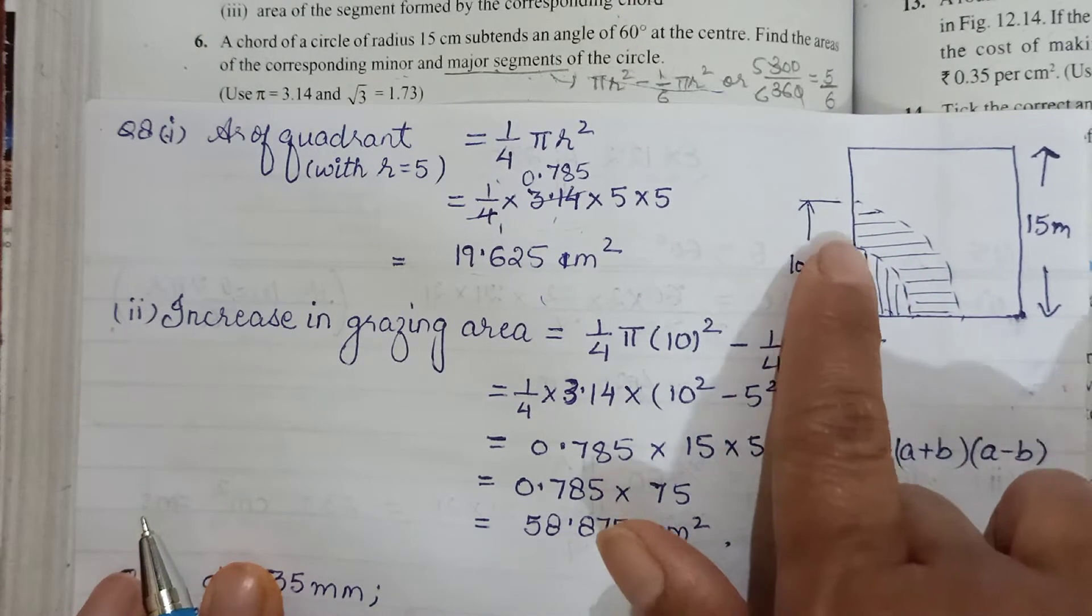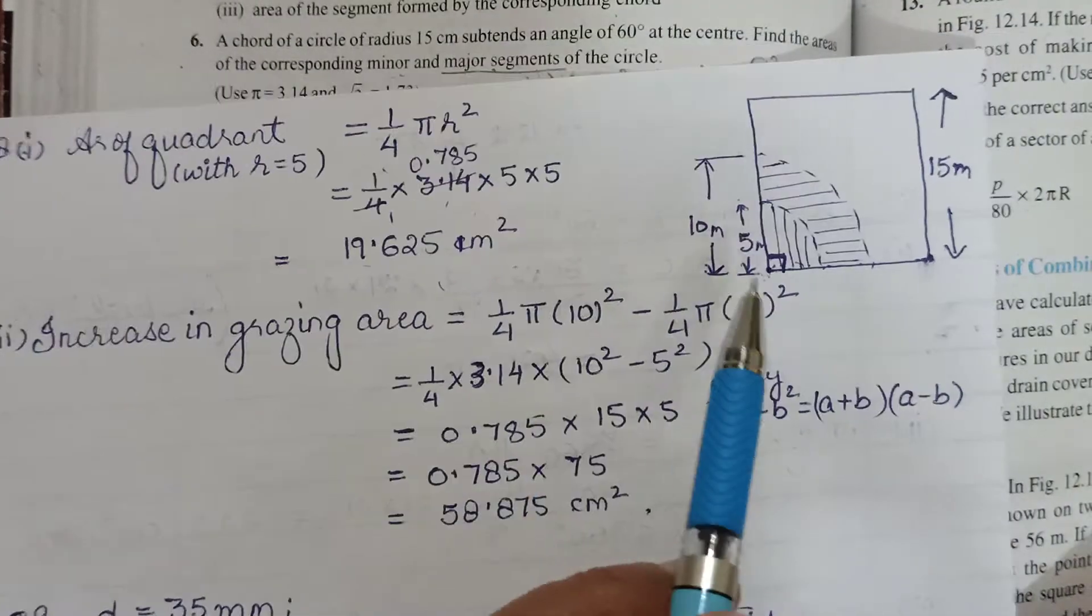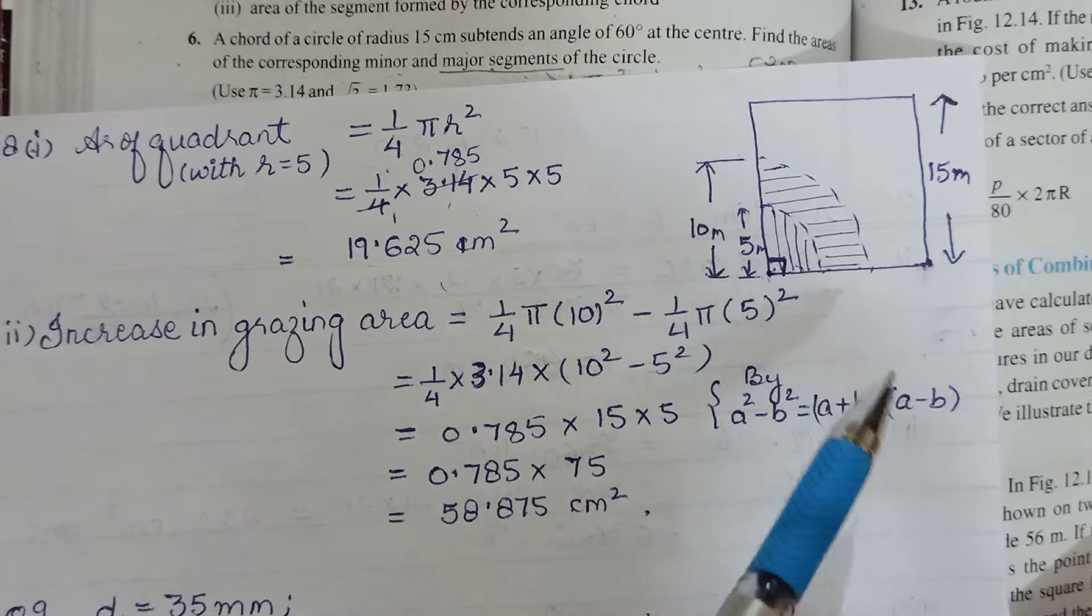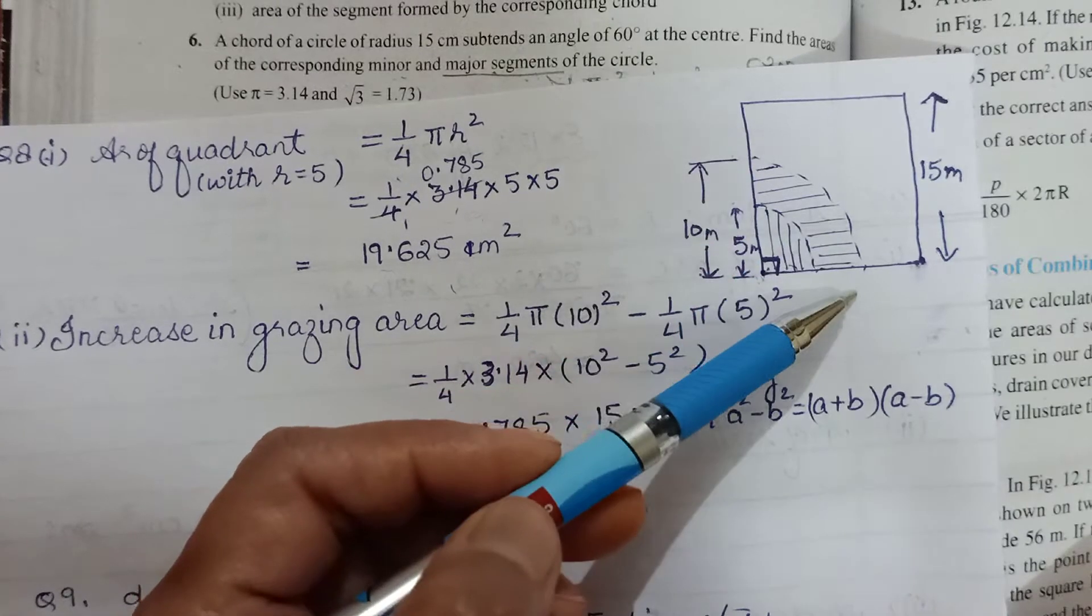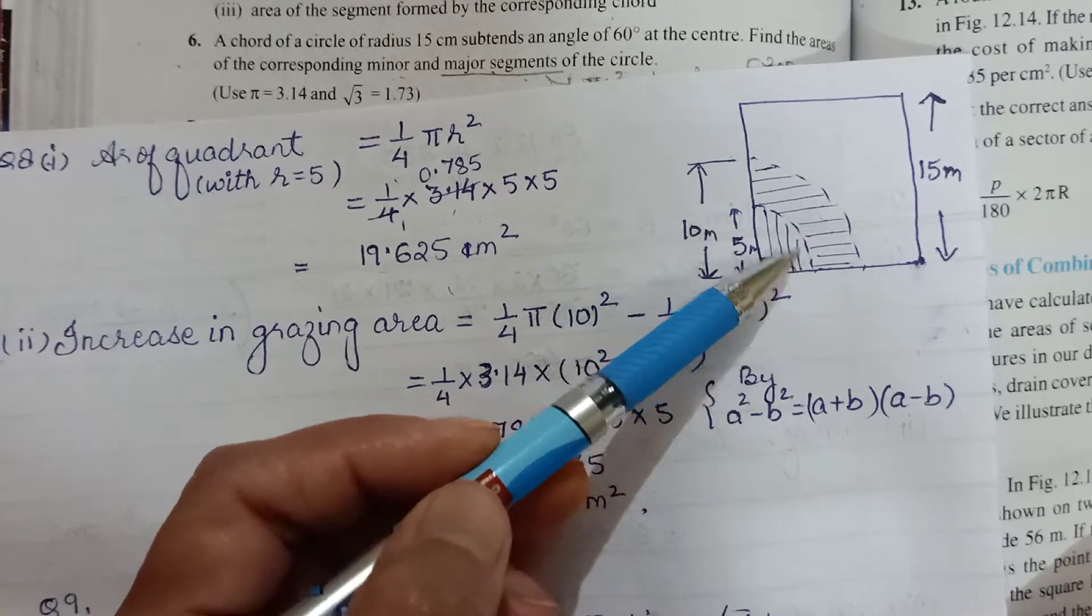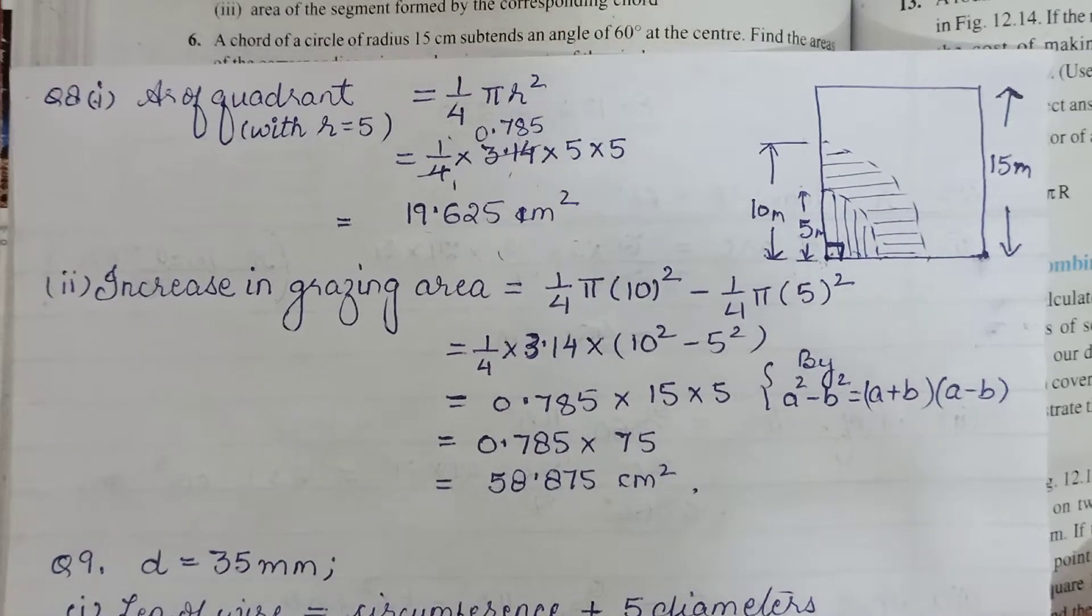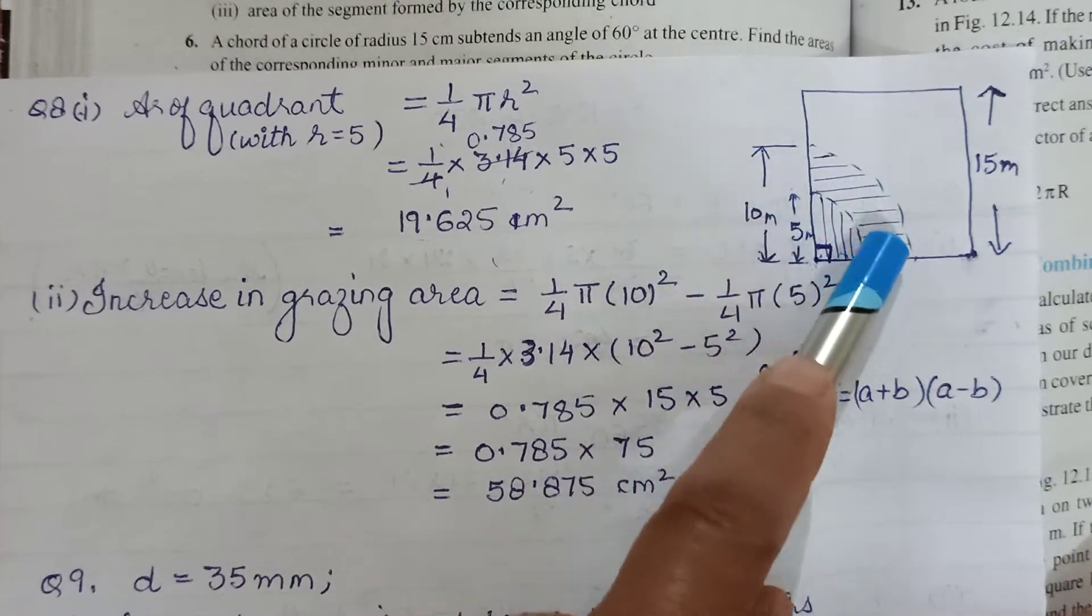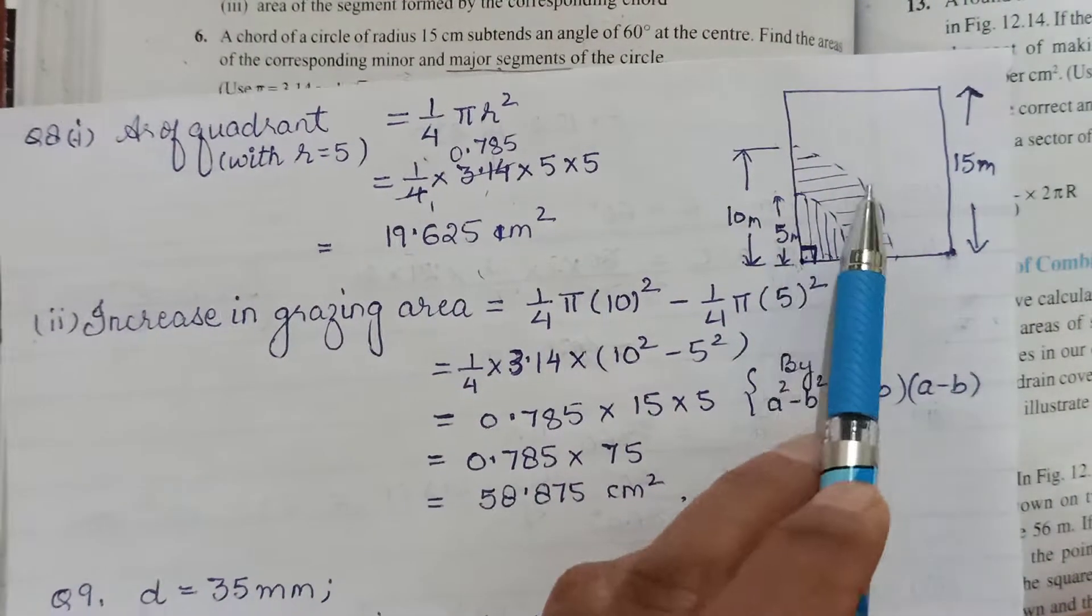Next was increase in the area. I've done shading - the vertical lines represent the first part answer, and the horizontal lines represent the increase. The bigger quadrant minus the smaller quadrant will give you the increase. They haven't directly asked how much the area would be if the rope was 10 meters - they asked for increase.